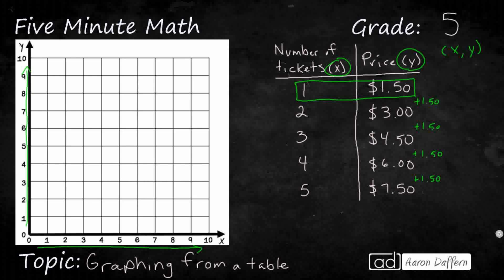If you are ever asked to take information from a table and put it onto a graph, most likely they've already labeled the x and the y for you, which means if I wanted to bring out this coordinate pair right here, take a look: my first x value is going to be 1, my first y value is going to be 1.50.